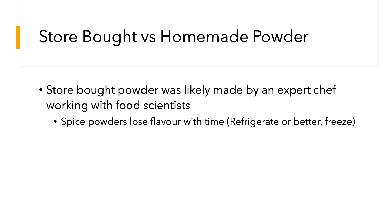Spice powders kept on a shelf will lose flavor with time and oxidize — many molecules are volatile and will escape. It's better to refrigerate them, or even better, freeze them. You can keep them for a couple of weeks in the refrigerator, but if you want to keep them for months, it's better to store them in the freezer. If you make sambar three or four times a week, the regular refrigerator is fine because you'll use it up quickly.